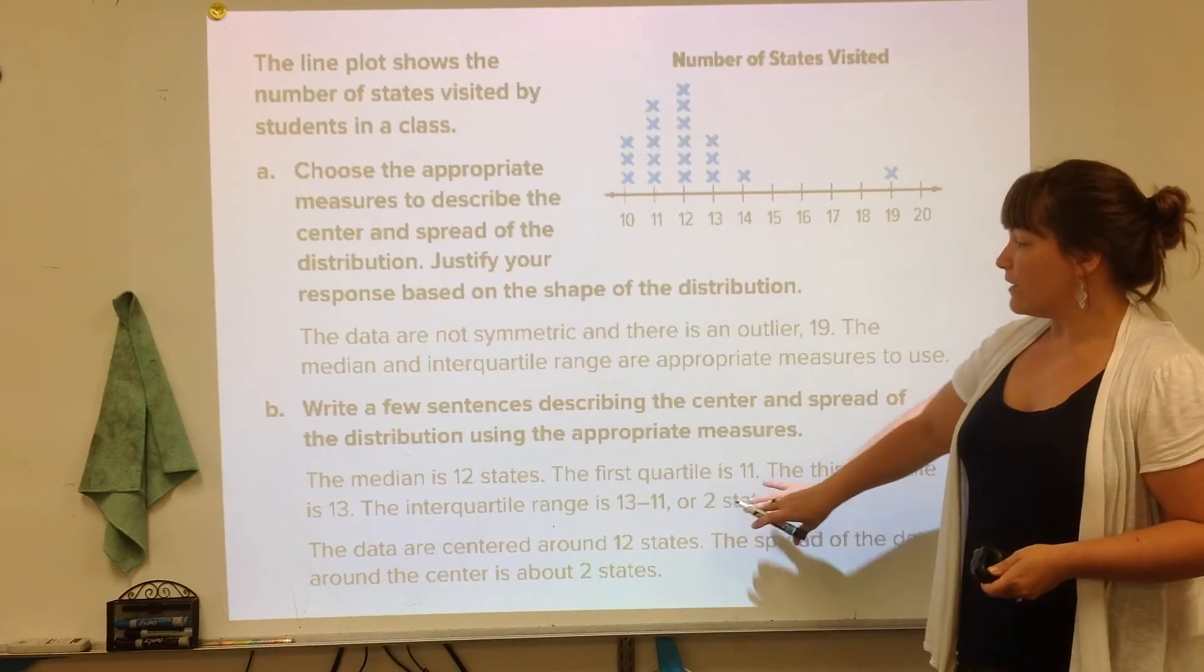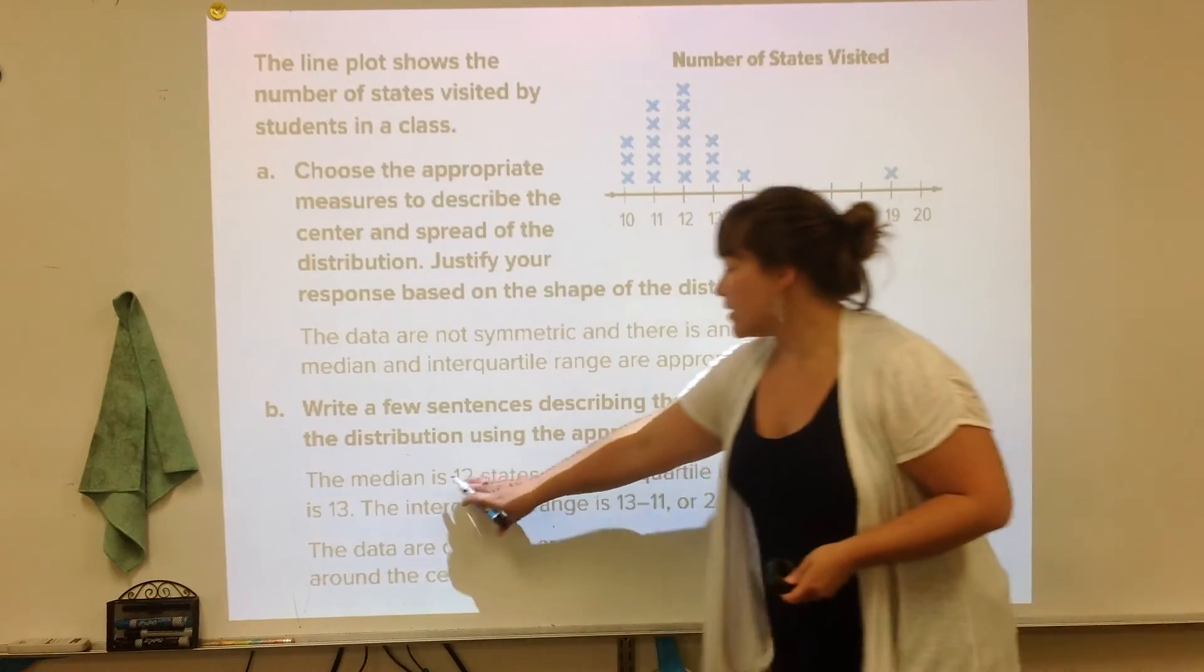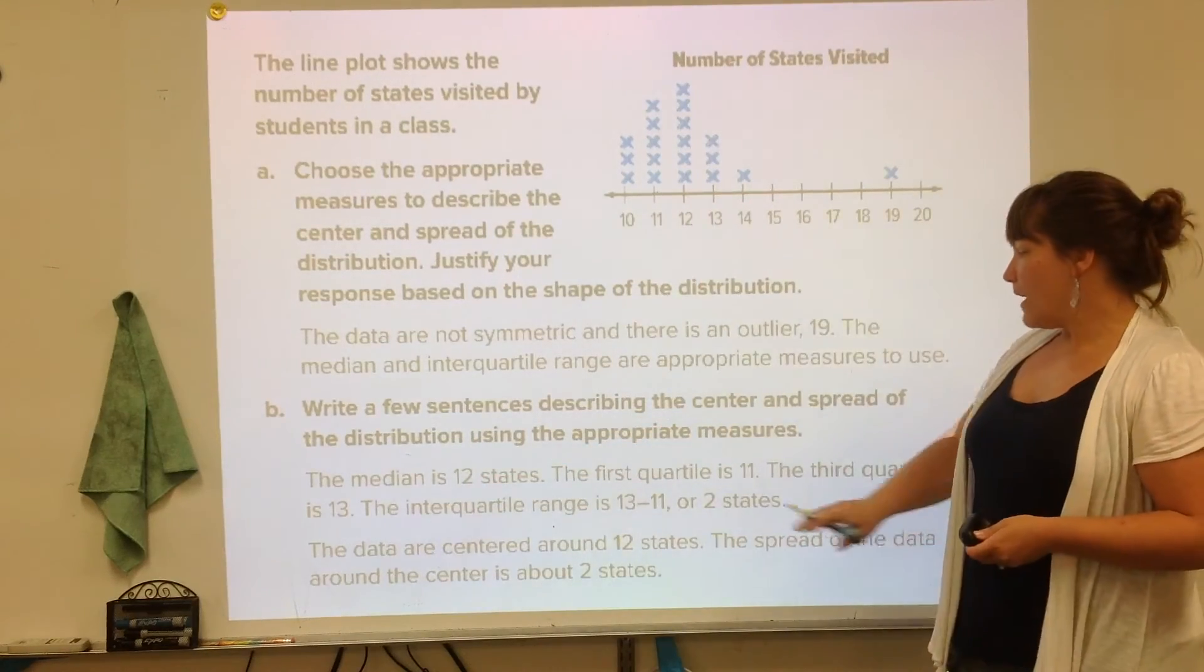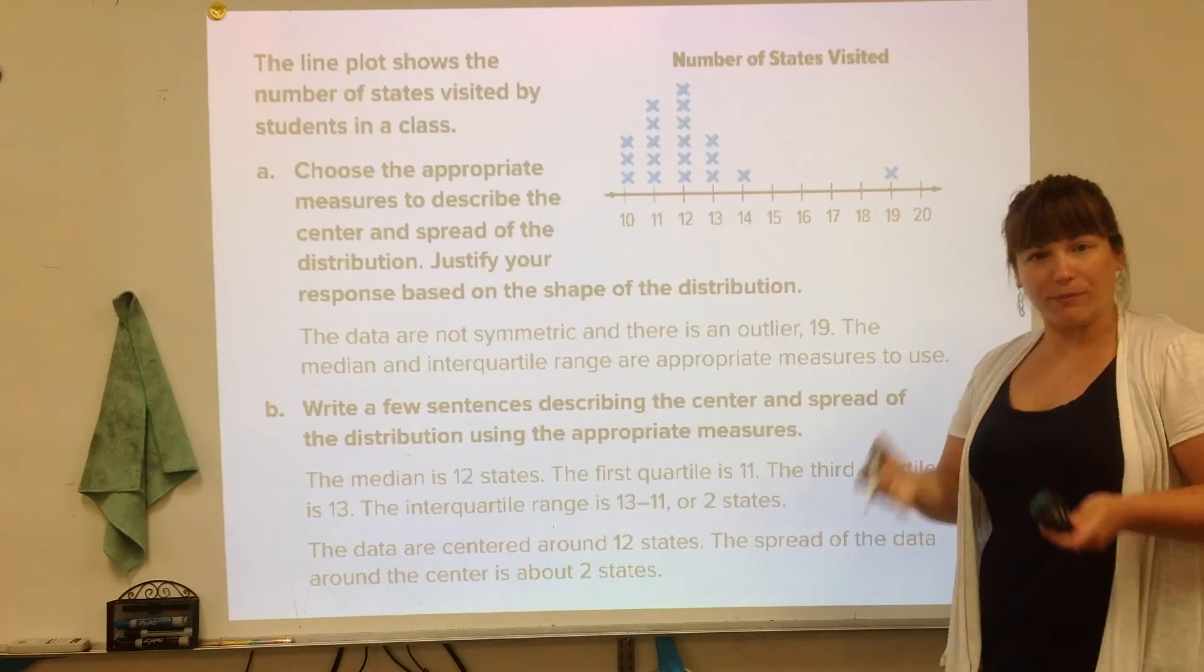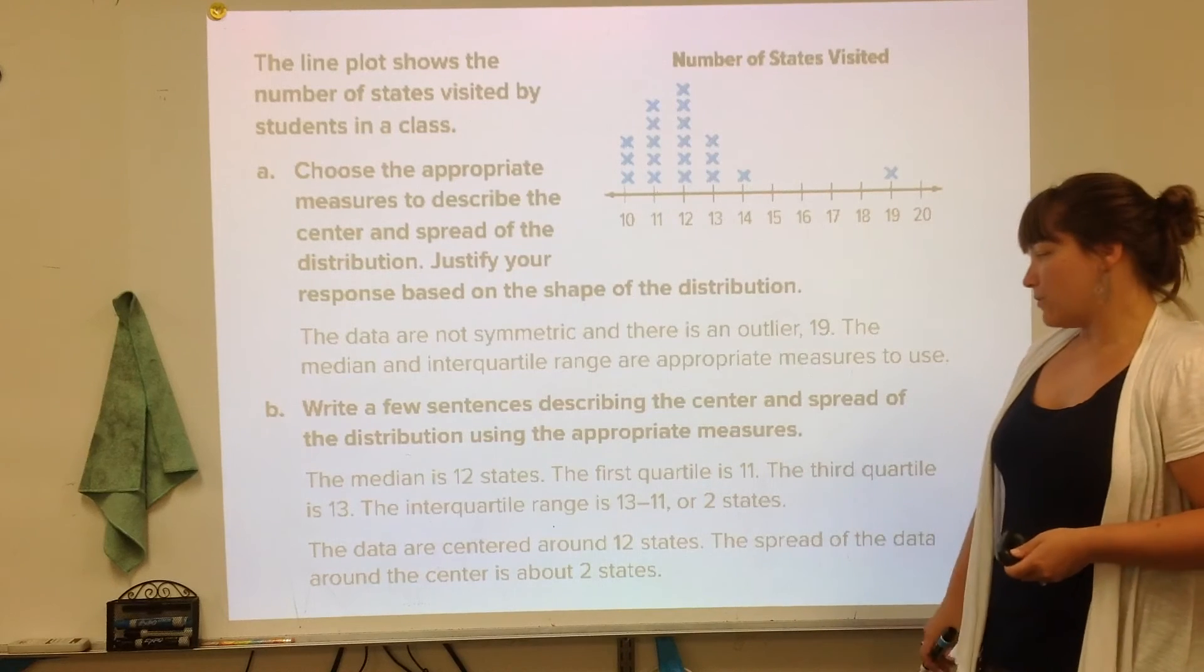And then the second part of it is actually finding the median and finding an IQR back from chapter 11. That's a review. And this is the answer. Actually, once you've found it, the median is 12. And then the first quartile is 11, just reporting out. The third quartile is 13, and the interquartile range is 2.